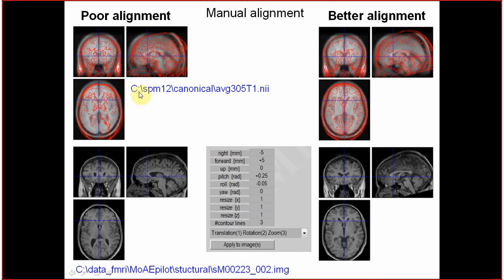First of all, you have to open both images using the Check Reg button. I will show you how to create those nice contours projecting one image onto the other. This is the initial view you need to get, and this is the resulting view where you can see that the alignment of the canonical image and your individual sample is still not perfect because the shape is not the same — but it is already better than what we had before.